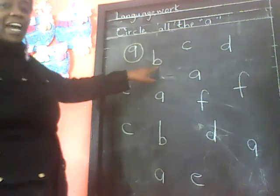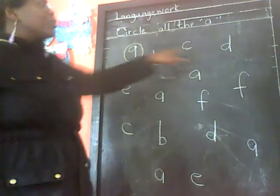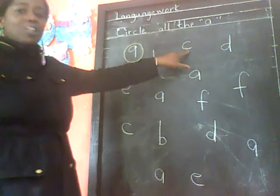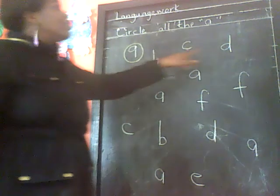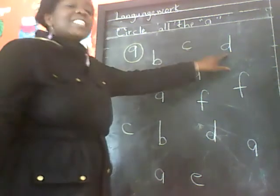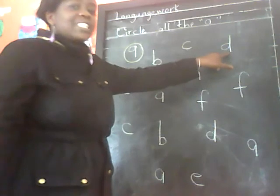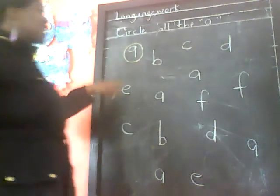Is this sound R? No. This is sound B. Is this sound R? No. This is sound C. Is this sound R? No. This is sound D. So we do not circle it.